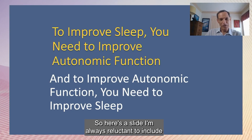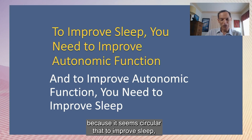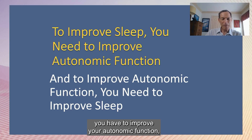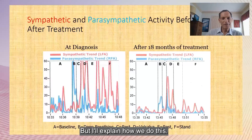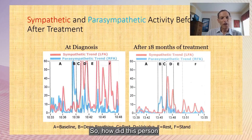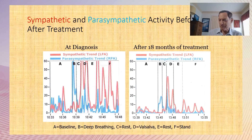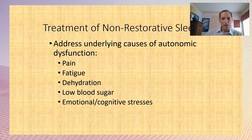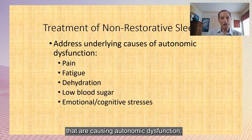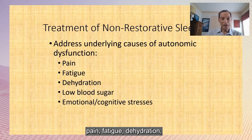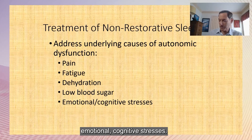It seems circular that to improve sleep you have to improve autonomic function, and to improve autonomic function you have to improve sleep — but I'll explain how we do this. The main causes of non-restorative sleep are the same things causing autonomic dysfunction: pain, fatigue, dehydration, hypoglycemia in some cases, and emotional and cognitive stresses.